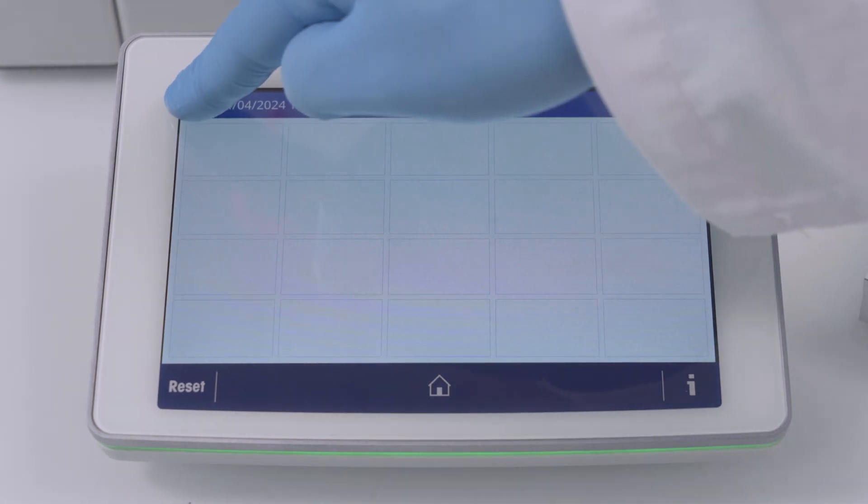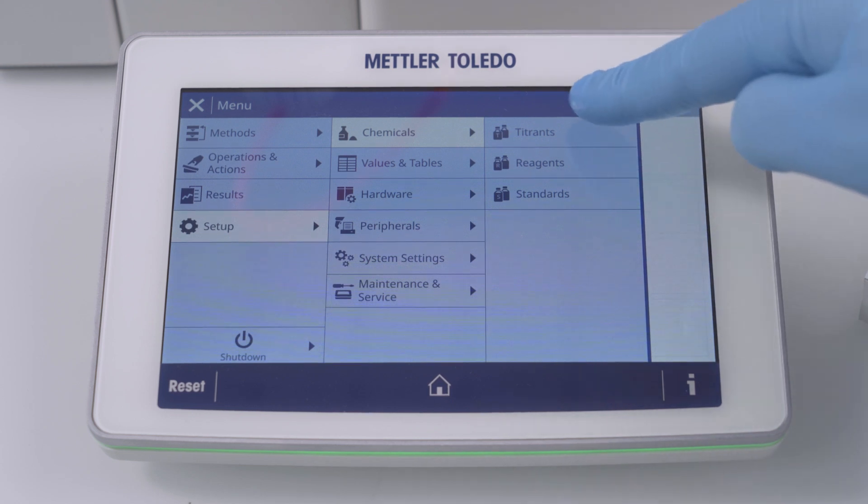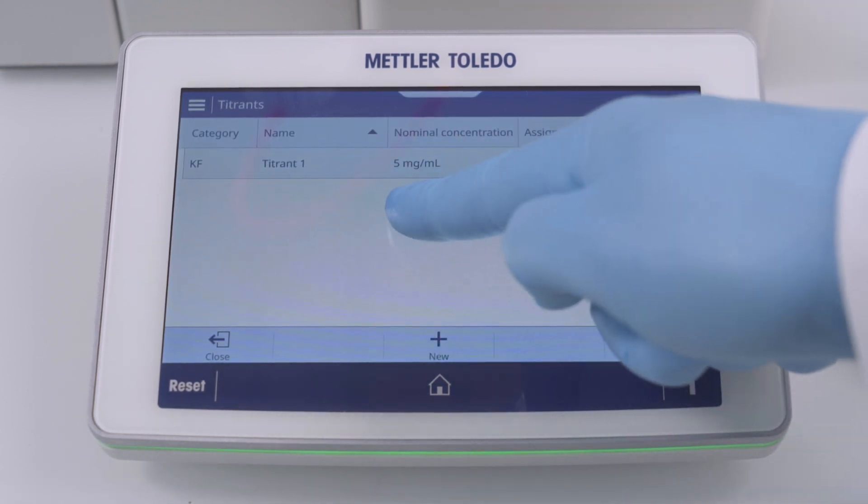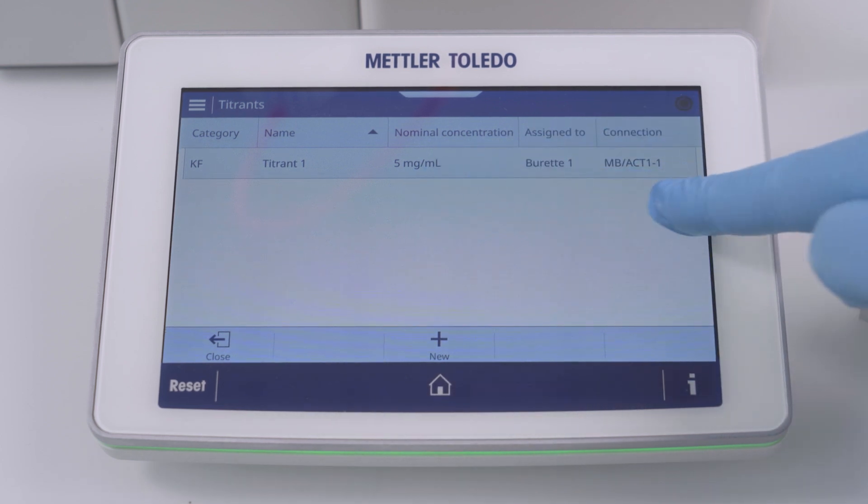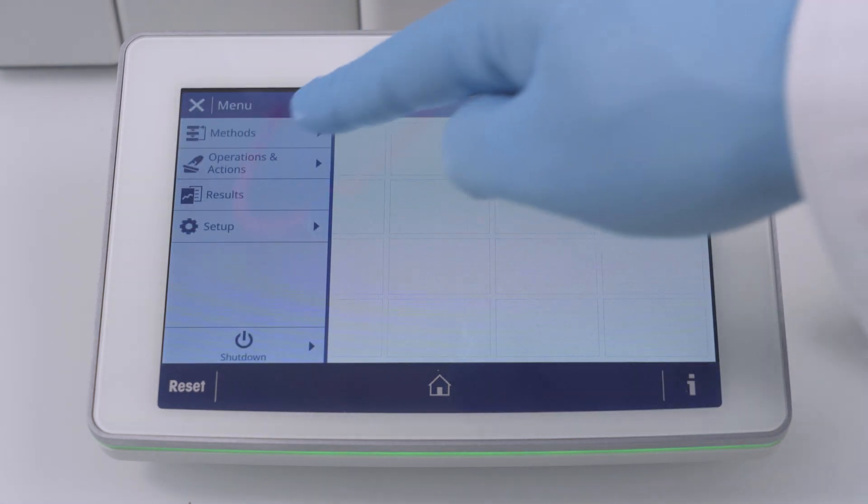It's good practice to also check the entries of the automatically identified resources. Check if the nominal concentration of the titrant is correct and if the type and name of the connected sensor match the physically connected one. The connection fields show to which socket of the boards the resource is connected to and indicates that the communication is working correctly.